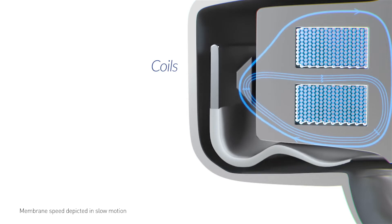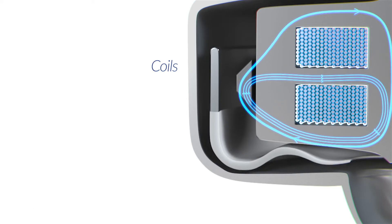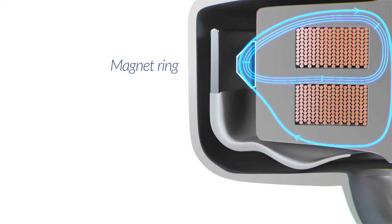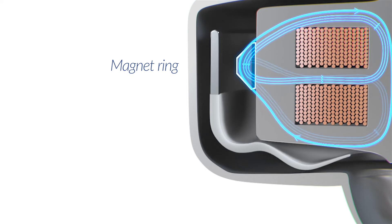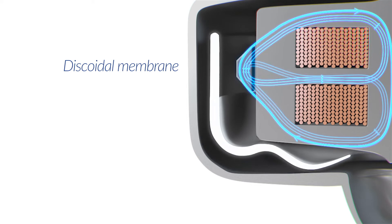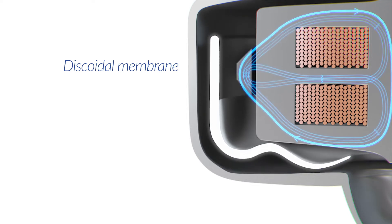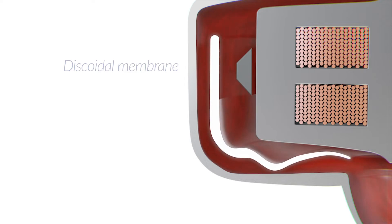As current runs through the coils, magnetic fields generate oscillations in a magnetic ring. These oscillations trigger a wave propagation along the discoidal membrane, which propels the blood inwards.